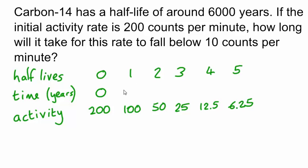Which means that the time will be 6,000 years per half-life, so that's 6,000, 12,000, 18,000, 24,000. And the final answer then will be 30,000 years.